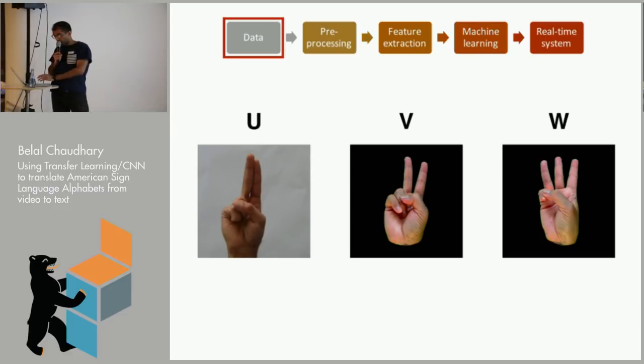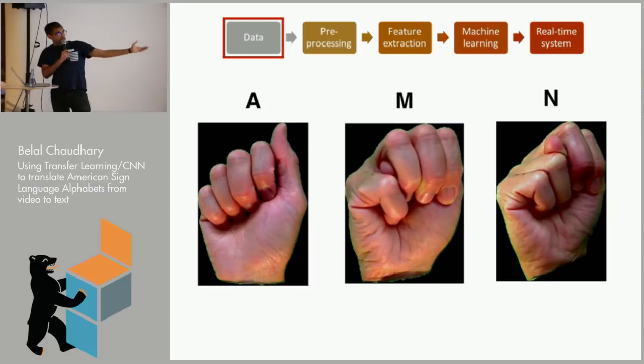So that's a U, V, and a W, fairly distinct. But then as you see like an A, an M, and an N, it becomes extremely similar. So it's a bit of a challenge.